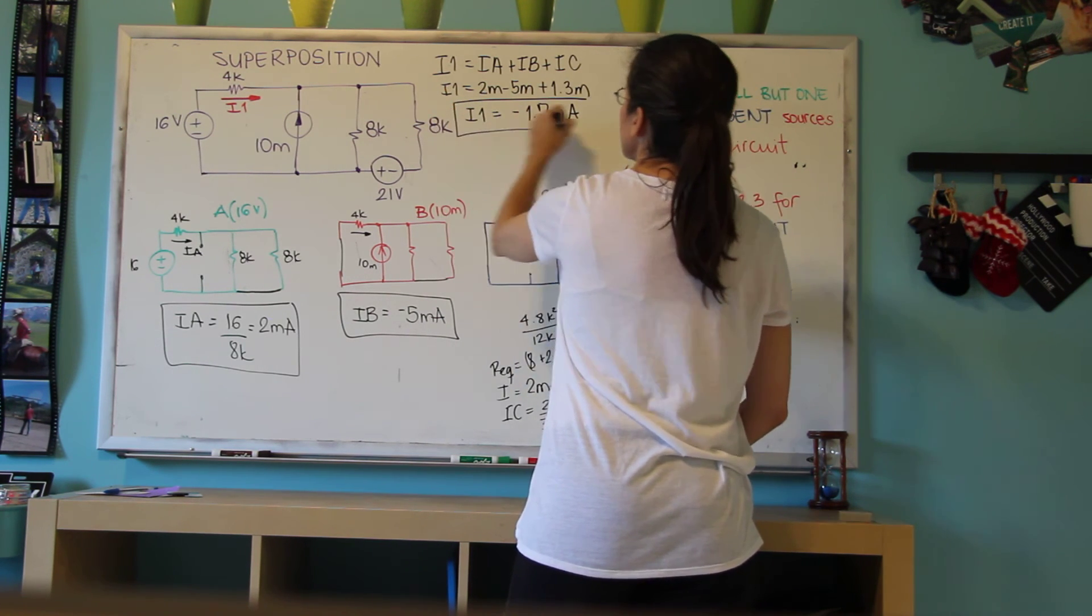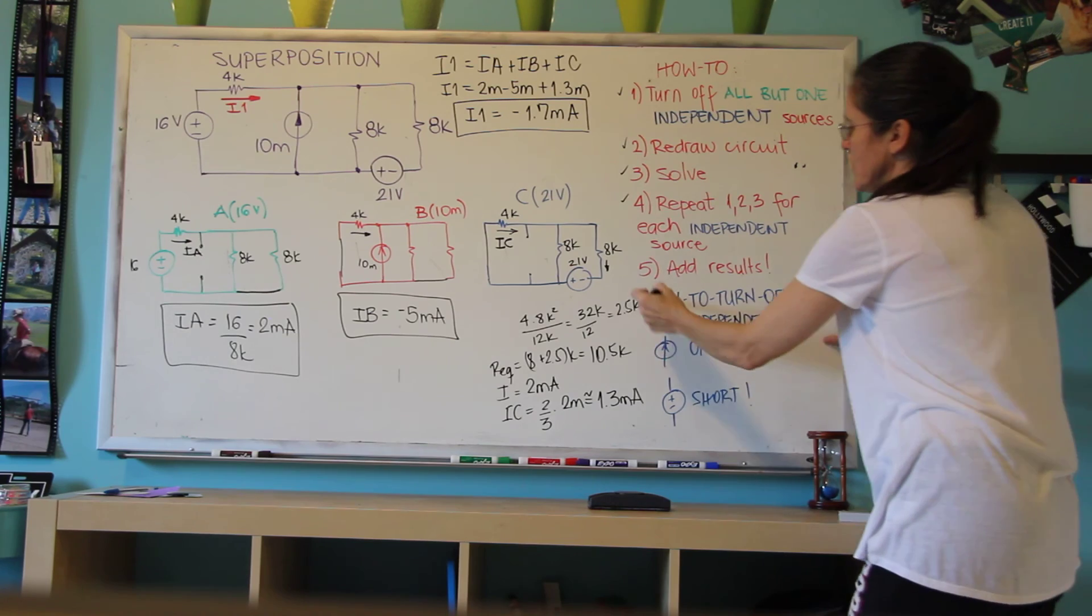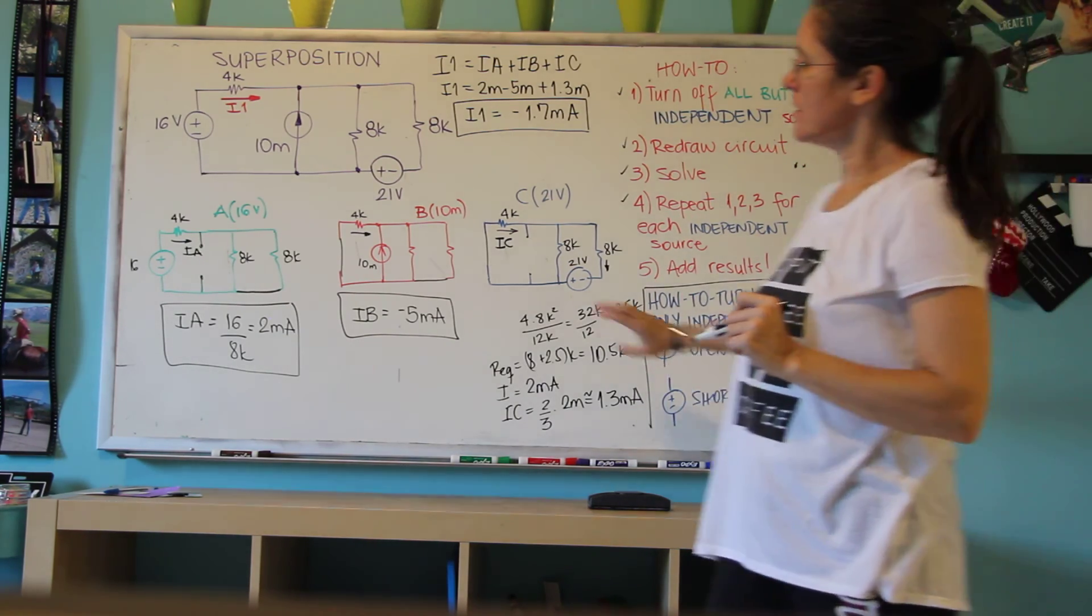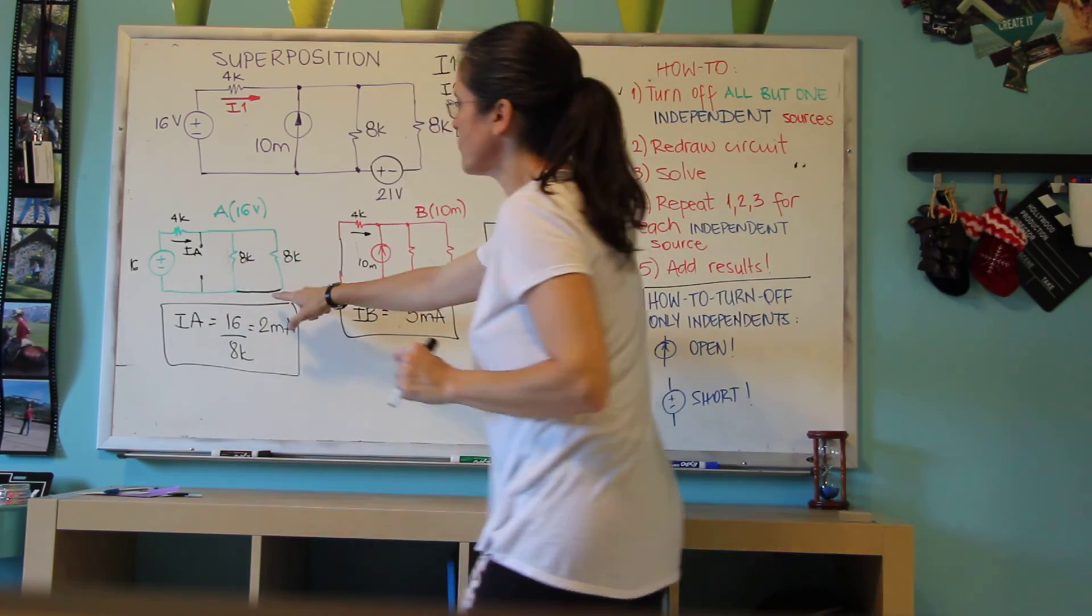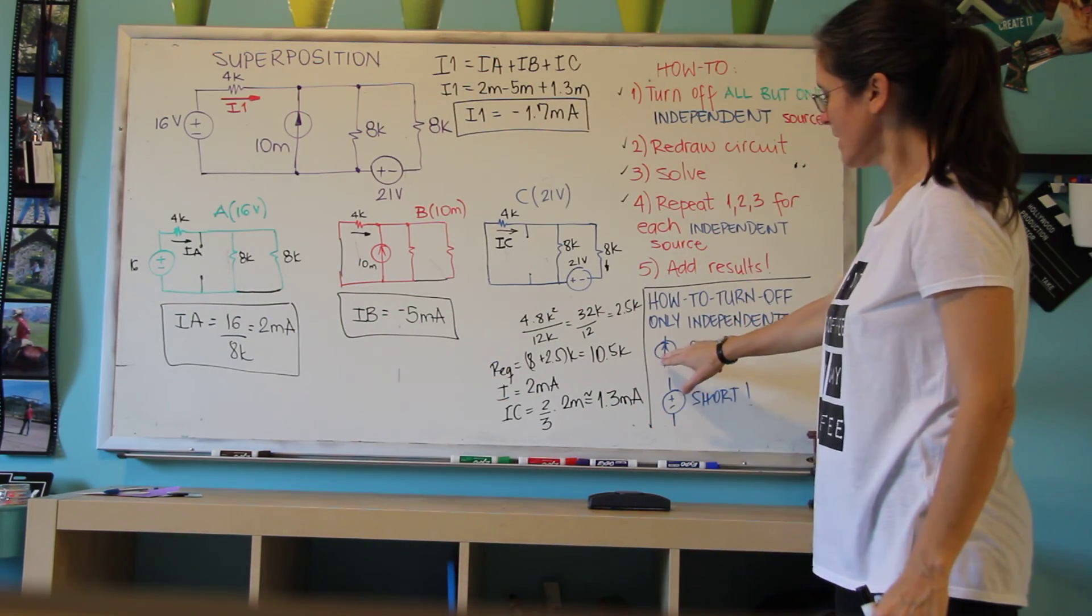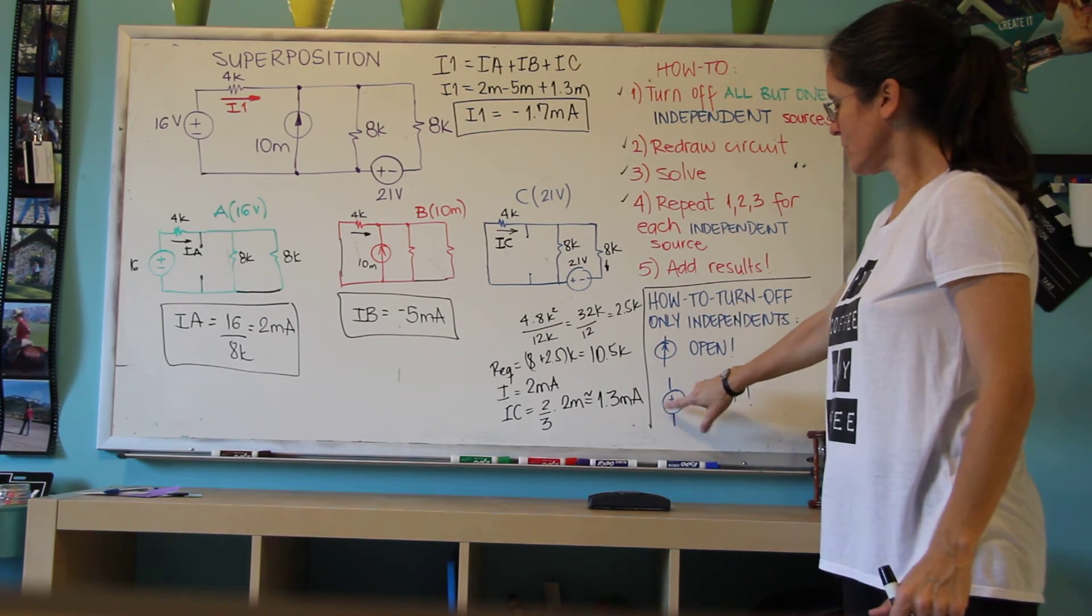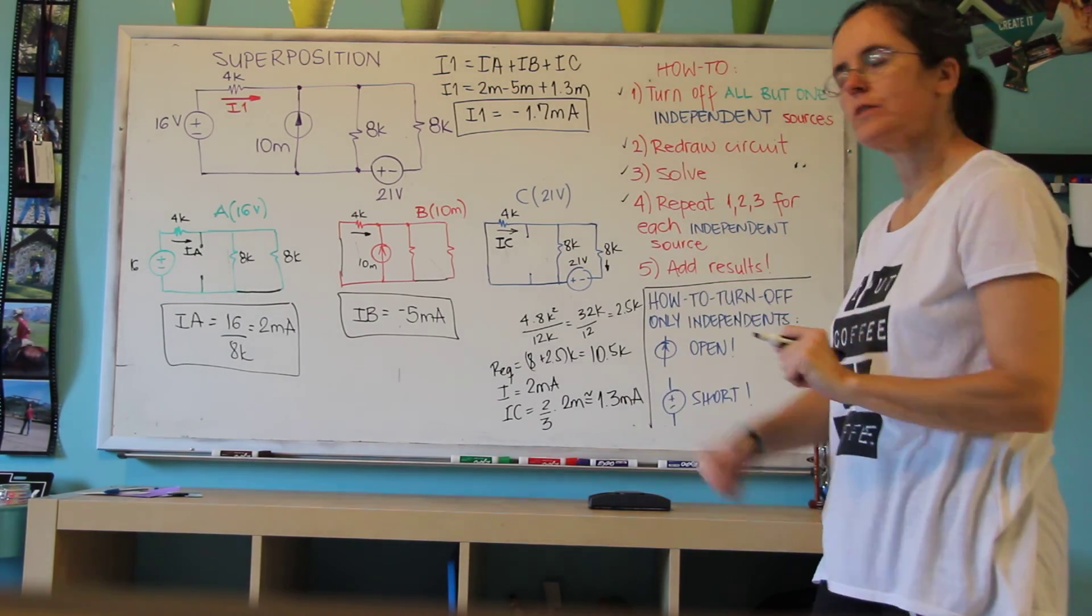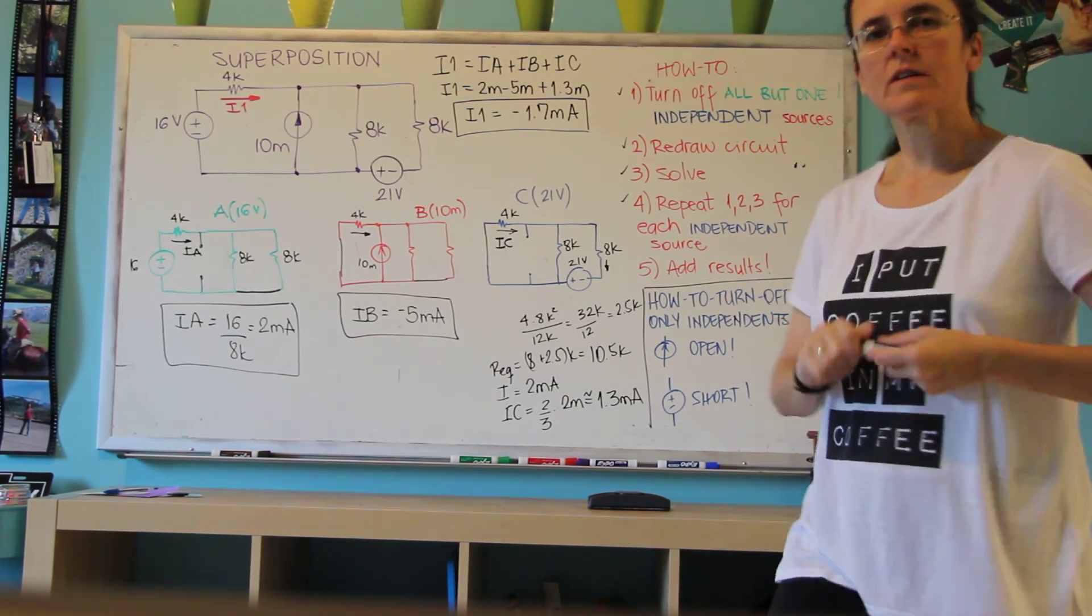And this is our final result. So the take home message here is, you need to remember how to turn off the power supplies. And when it's a current source, you open it. When it's a voltage source, like this one, you short across the terminals. The way I remember it is, the current is usually the arrow, so I open it. This voltage supply is usually open, and I short it, so I invert the idea of the drawing here. So I hope this was clear enough. All right.